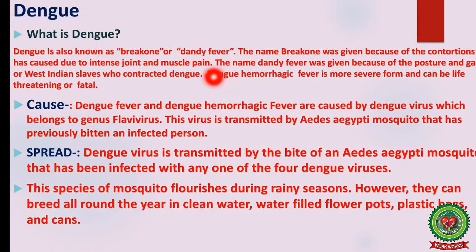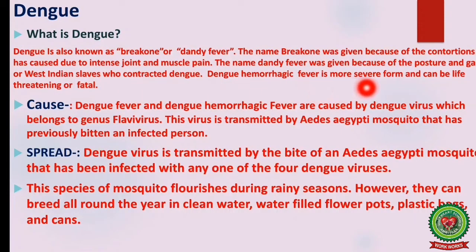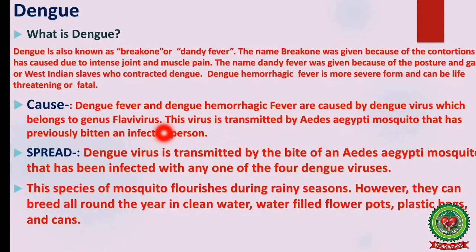Next is dengue, also known as breakbone fever or dandy fever. The name 'breakbone' was given because of the contortions caused by intense joint and muscle pain. The name 'dandy fever' was given because of the posture and gait of West Indian slaves who contracted dengue. Dengue hemorrhagic fever is a more severe form and can be life-threatening or fatal.